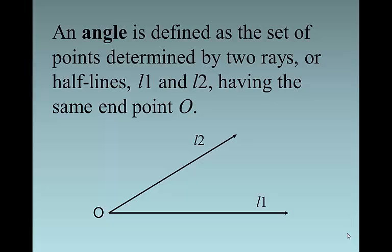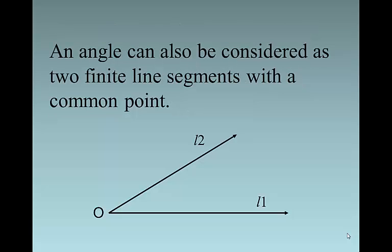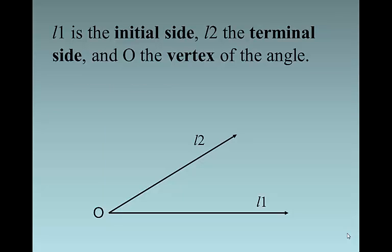An angle is defined as a set of points determined by two rays or half lines, L1 and L2, having the same endpoint O. An angle can also be considered as two finite line segments with a common point. L1 is the initial side, L2 the terminal side, and point O is our vertex of the angle.